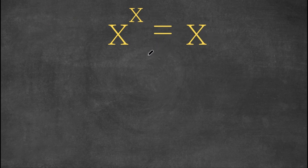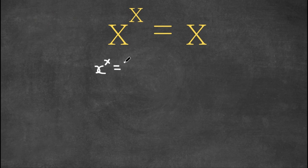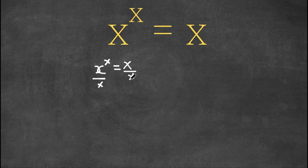What I'm first going to do is divide by x on both sides. So we have x to the power of x equals x, and if I divide by x on both sides, on the right side, x divided by x is simply 1, because anything divided by itself is 1.